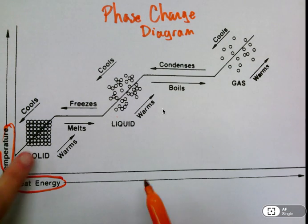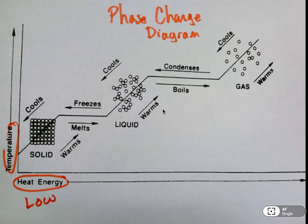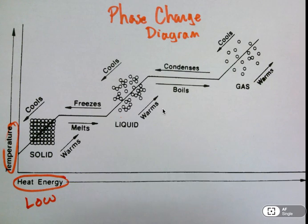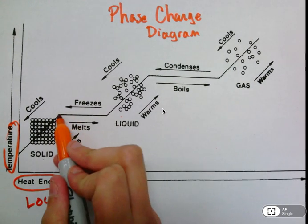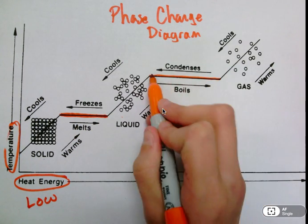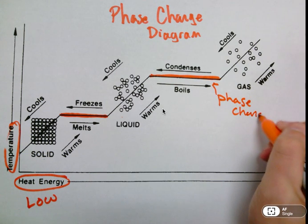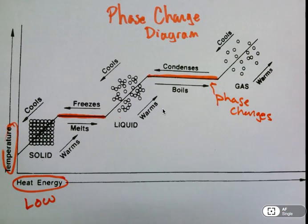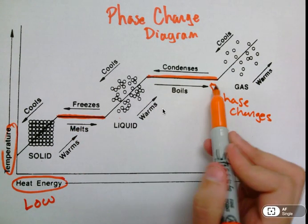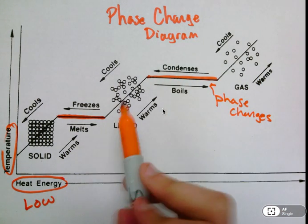So we see here with solids, they have low amounts of heat energy. That means the atoms aren't moving around, so they would kind of condense and there wouldn't be a whole lot of space. As you add energy, you see these areas where it's flat? These are our actual phase changes. This is where we go from one state of matter to the next, either by melting a solid into a liquid, boiling a liquid to a gas, or going in the opposite way, condensing gases to liquids and freezing liquids to solids.